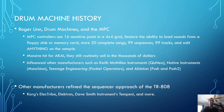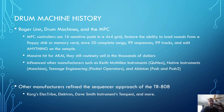The pad layout in particular had a huge influence on other manufacturers, including Keith McMillan Instruments' QuNeo — personally my favorite pad controller for finger drumming — Native Instruments' Maschine, and Teenage Engineering's Pocket Operators. It was even expanded to 64 different pads in Ableton's Push and Push 2 controllers. Other manufacturers refined the sequencer approach of the 808, including Korg's Electribe, the Elektron line, Dave Smith's Tempest (created in collaboration with Roger Linn), Teenage Engineering's OP-Z, and others.